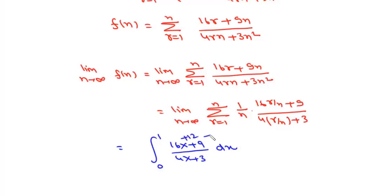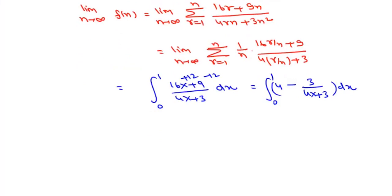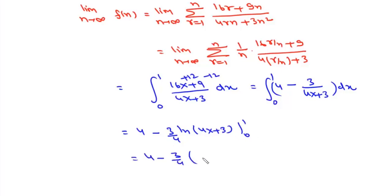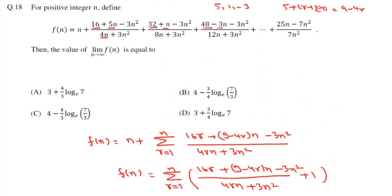Now we add and subtract 12 to rewrite the integrand. The integral from 0 to 1 becomes 4 minus 3 upon (4x plus 3) dx. Integrating gives 4 minus (3/4)·log(4x plus 3), evaluated from 0 to 1. This gives 4 minus (3/4) times (log 7 minus log 3), which equals 4 minus (3/4)·log(7/3). That's option b: 4 minus (3/4)log(7/3).